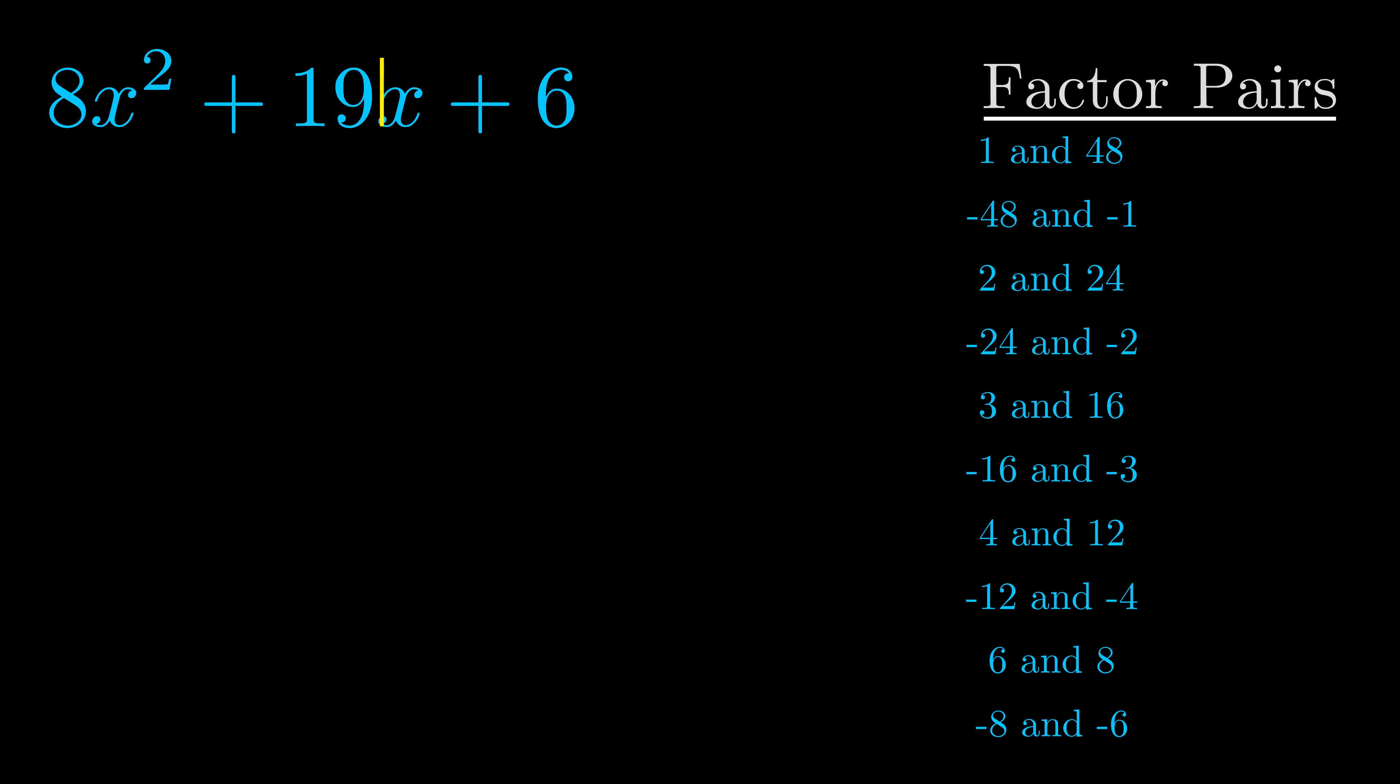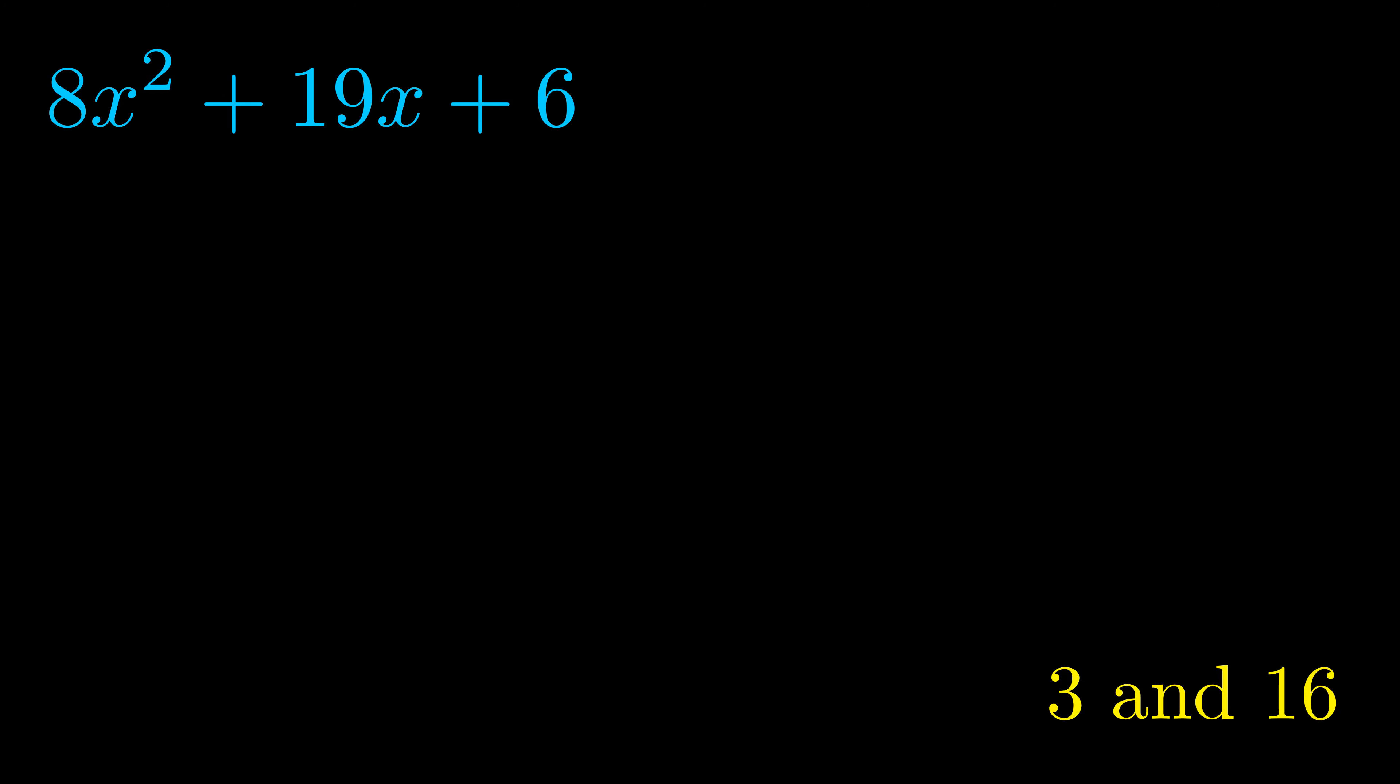the one that we haven't done anything with yet. And really this is the only factor pair that we need. Now once we have this factor pair what we want to do is use it to split up the b value.